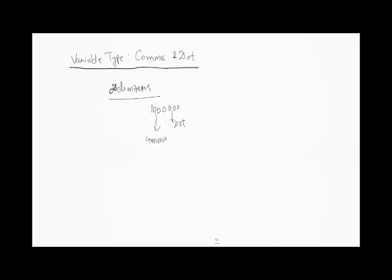In many other countries this convention is reversed. For example, in Europe, 10,000 might be written with a dot as the thousands delimiter — '10.000' — and then a comma for the decimal value. So the delimiter usage varies between countries, and it is important to define comma and dot variable types correctly in SPSS depending on your convention.